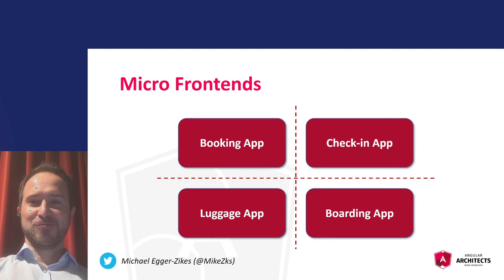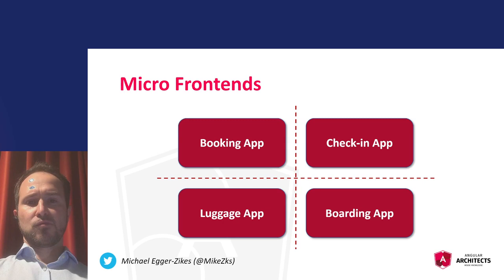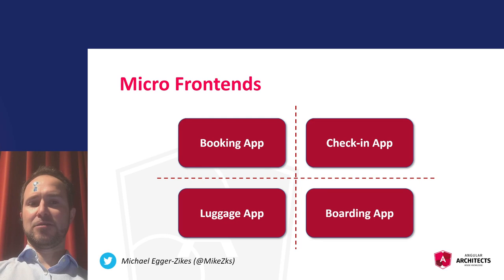Let's start with talking about micro-frontends. We can slice an application into tiny parts, into self-contained domains, and each domain can then be managed within one micro-frontend, one micro-app. In our example, which is a flight search engine, we can differentiate the flight booking area, the flight luggage area, the flight boarding area, and the flight check-in area. All of those areas can be independent domains, each managed in one micro-frontend.